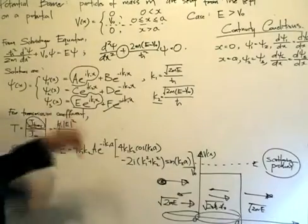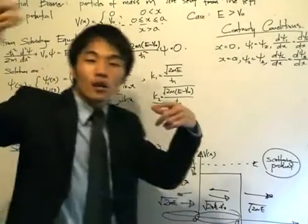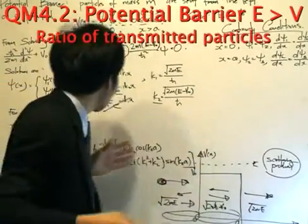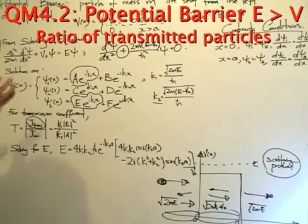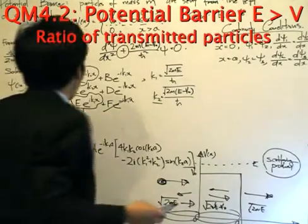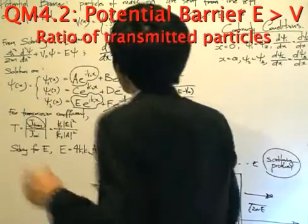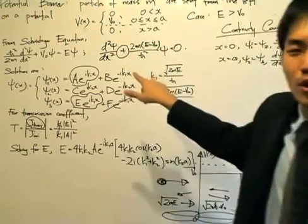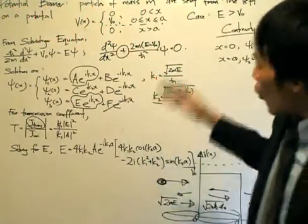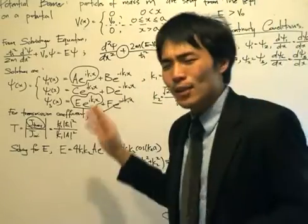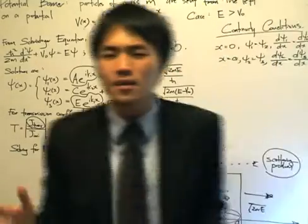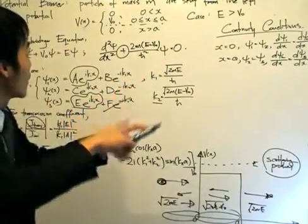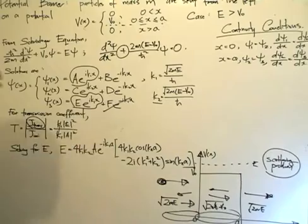We're going back to the continuity conditions. Notice that we have the potential being discontinuous at two points: x equals 0 and x equals 8. So we can apply the continuity equations even though the potential is discontinuous at those points, which are x equals 0 and x equals 8.